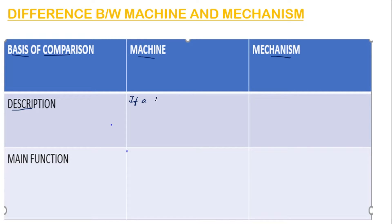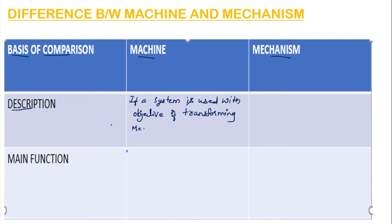So, a system used to transform mechanical energy is called a machine.